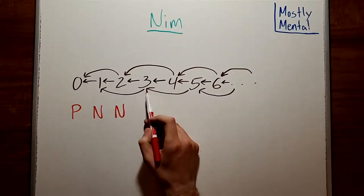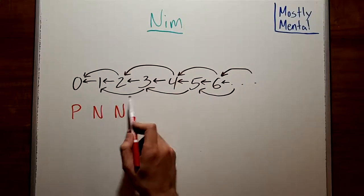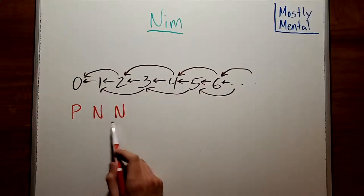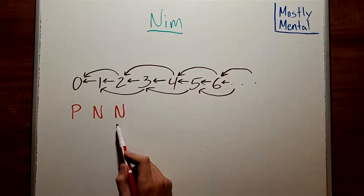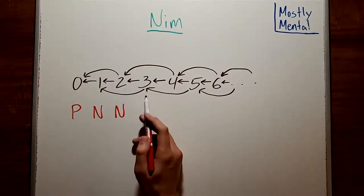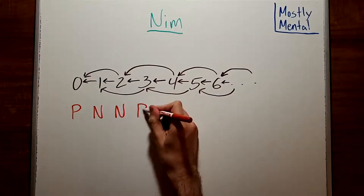How about three? Well, the next player can take one and end at two, or can take two and end at one. But as we just saw, those are both N positions, so the other player has a winning move from there. So the next player can't win, which makes three a P position.